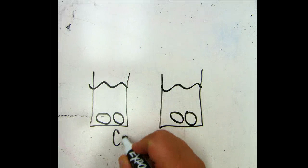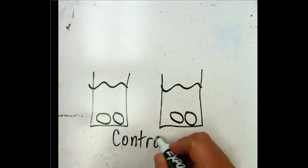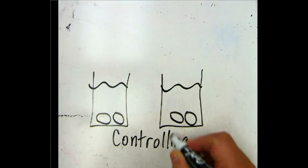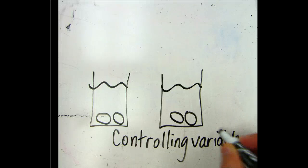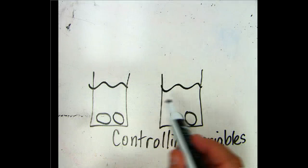And what we do is call that controlling variables. So when we have an experiment and we make sure everything is fair or the same in each container, we're controlling our variables.